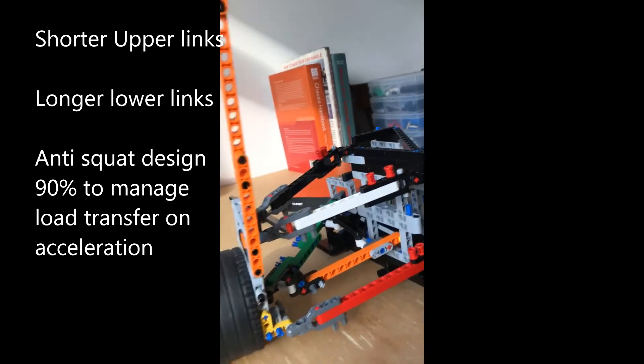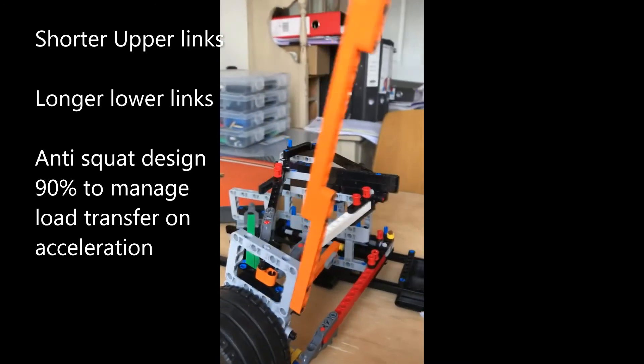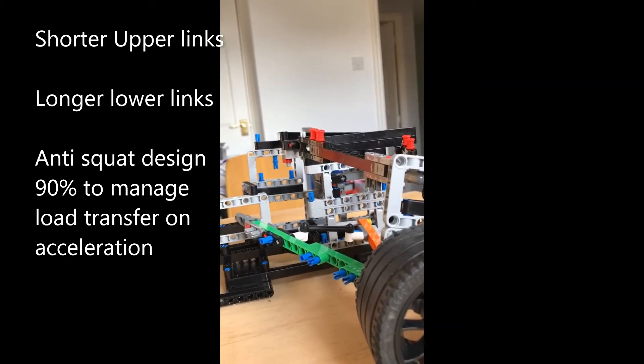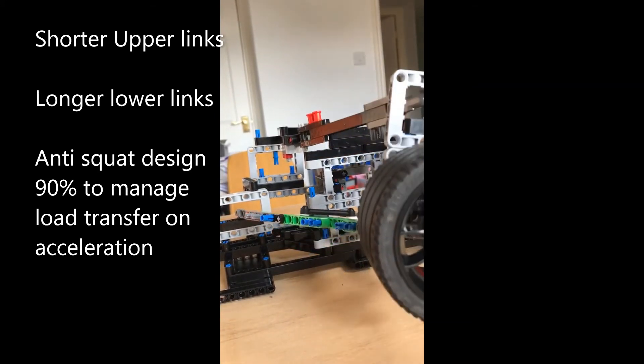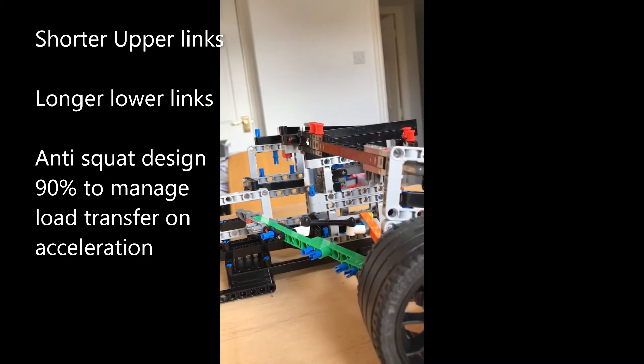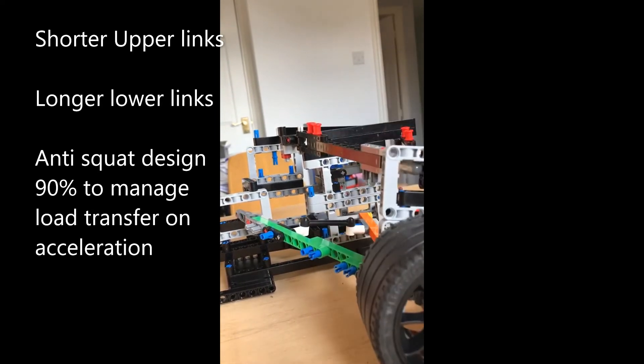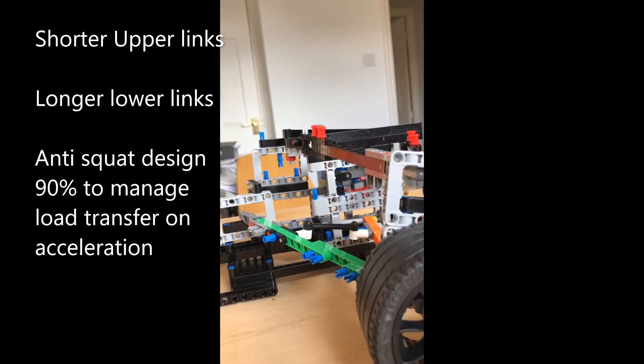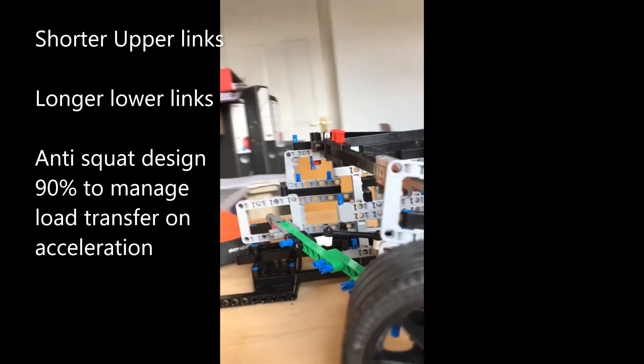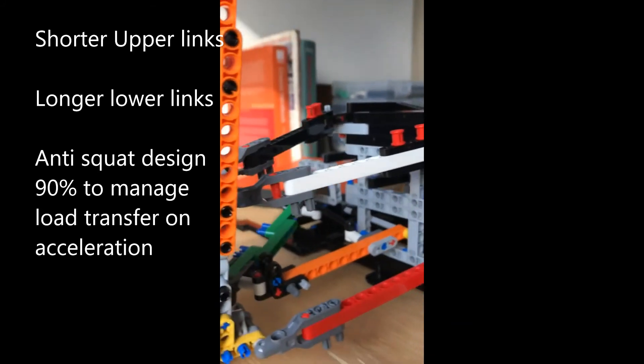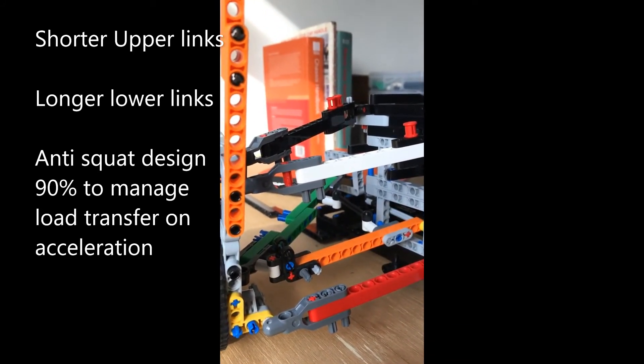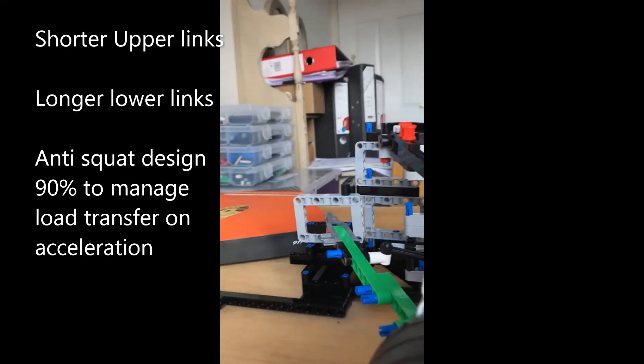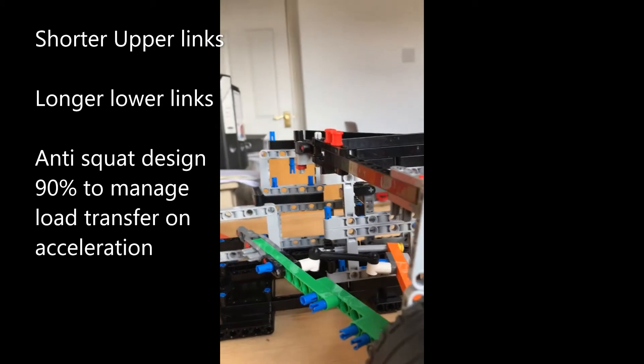There's something special about the design of the rear axle here because Porsche put what we call anti-squat, which is about 90% anti-squat facility into the rear axle. If you look at the green and the orange link arms, they are not on the same plane. The green pivot is slightly further up. And that defines the anti-squat angle.